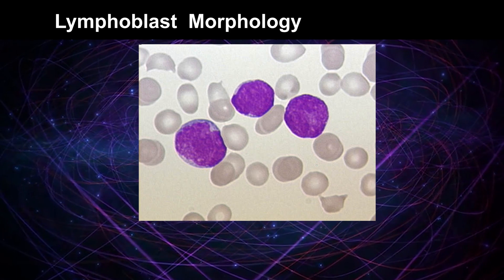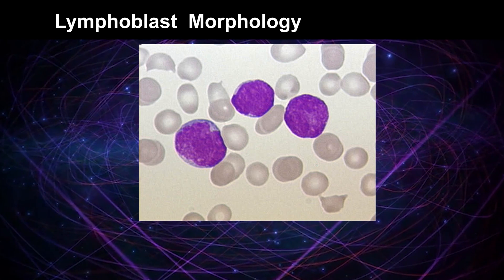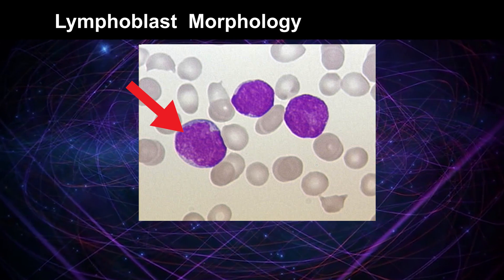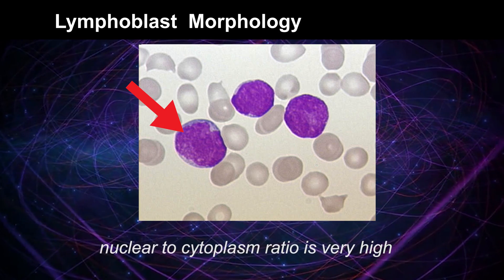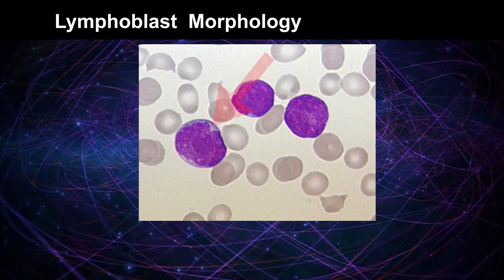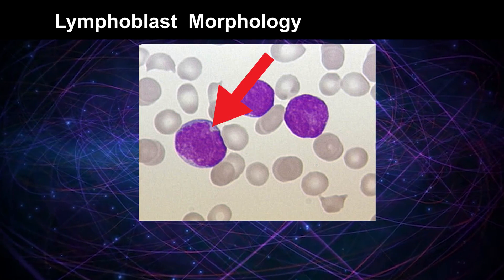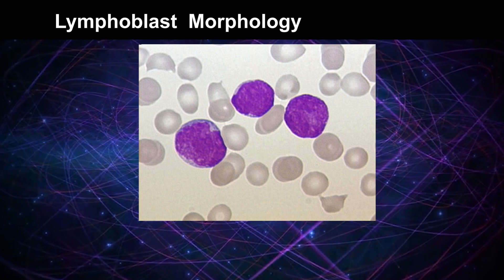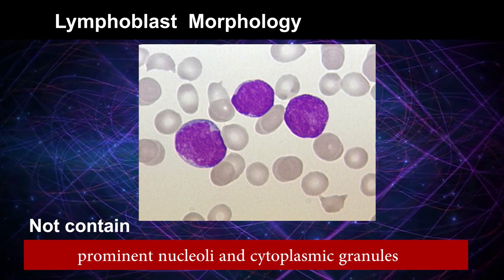When we consider cell morphology, lymphoblasts are round in shape. The size is between 10 to 20 micrometers. The nucleus of lymphoblasts is round and contains compacted chromatin. Also, the nuclear-to-cytoplasm ratio is very high, therefore we can see very scanty cytoplasm, and it does not contain prominent nucleoli and cytoplasmic granules.